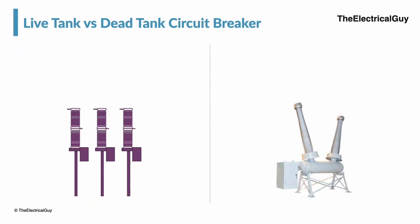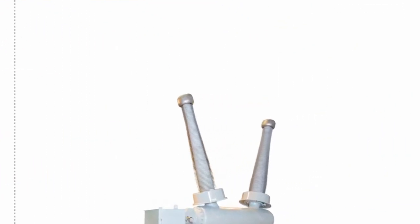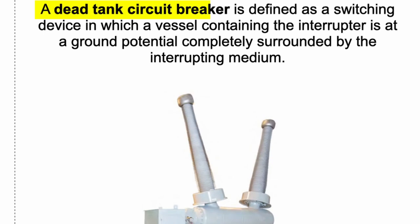A live tank circuit breaker is defined as a switching device in which the vessel containing the interrupter is at a potential above ground. On the other hand, a dead tank circuit breaker is defined as a switching device in which the vessel containing the interrupter is at ground potential, completely surrounded by the interrupting medium.